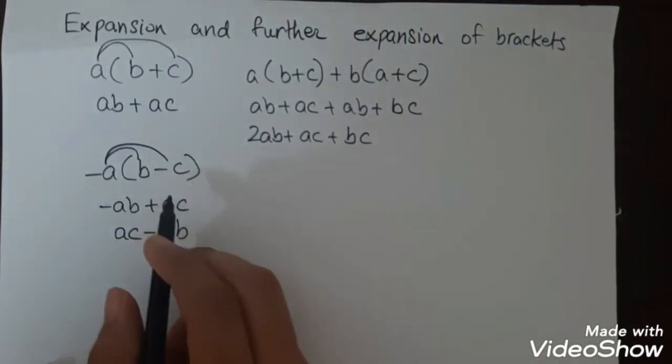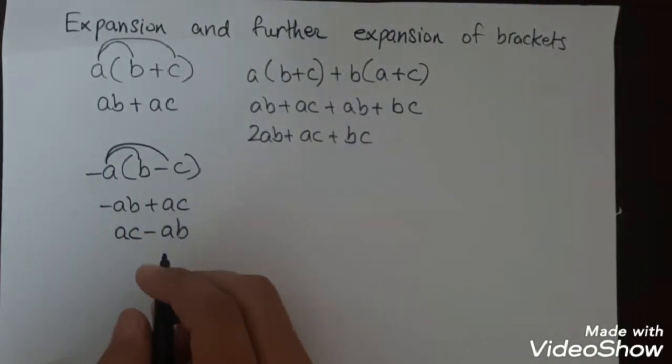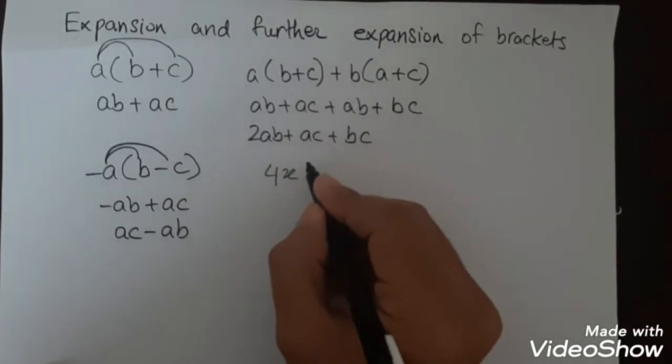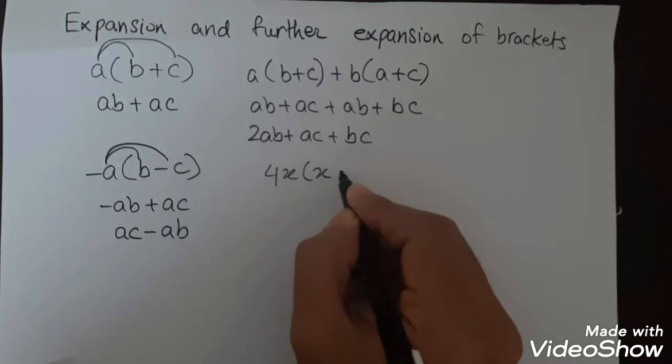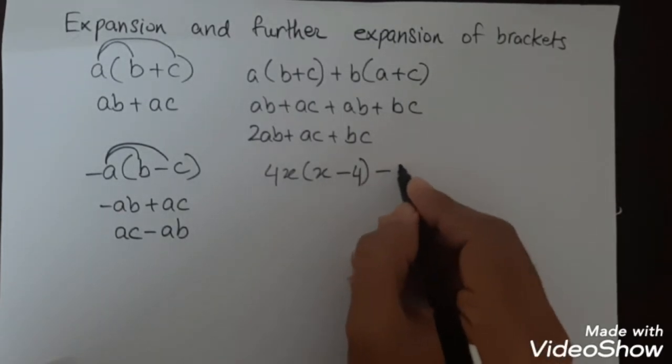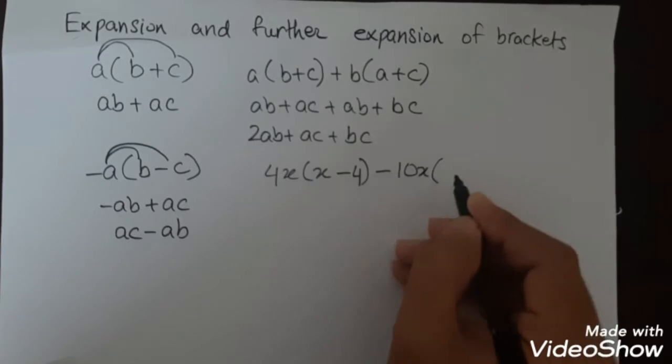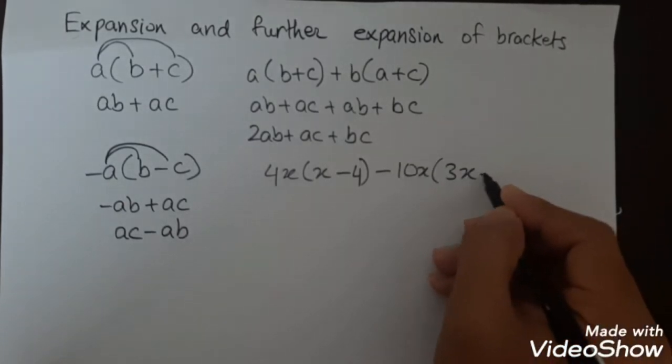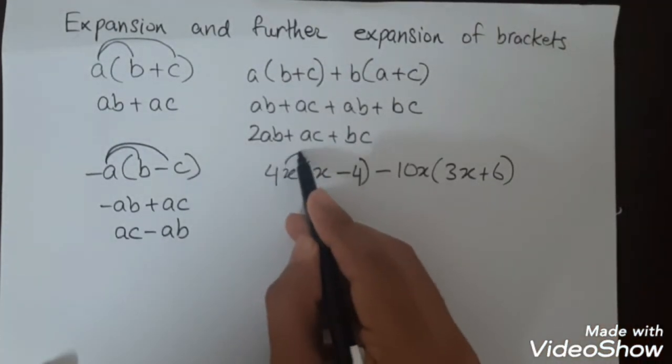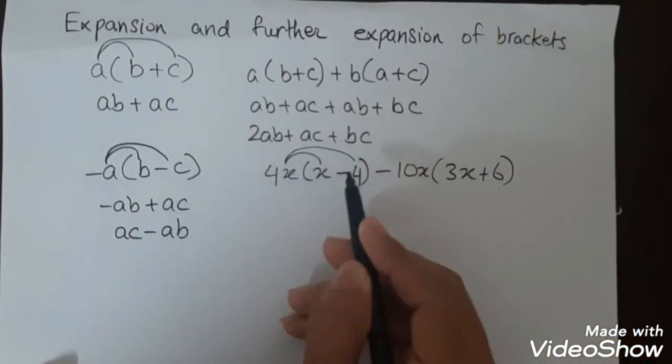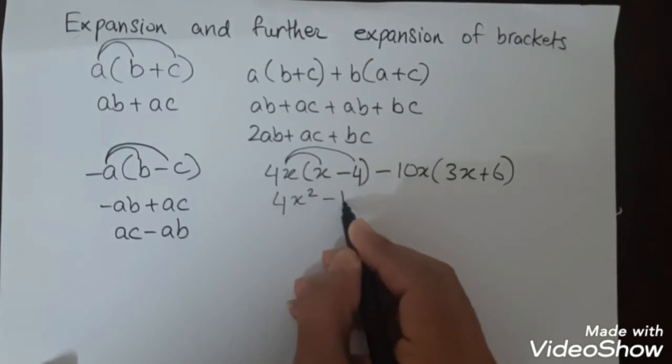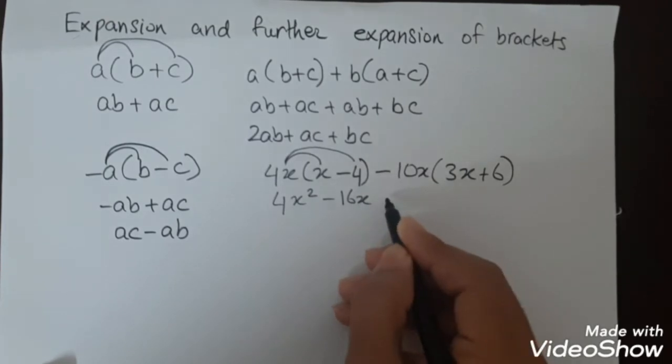Second example can be 4x(x-4) minus 10x(3x+6). So first, 4x with x and 4x with -4, which will be 4x² minus 16x.